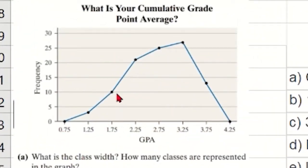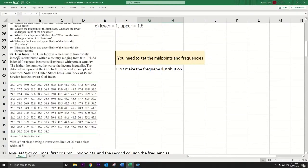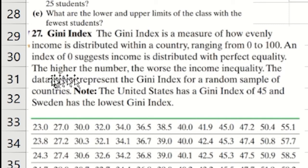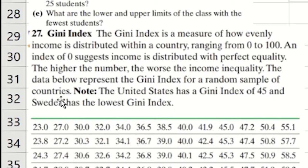A frequency polygon is lines connected by dots, and at the bottom are the midpoints. The question we're working with is the Gini index — a measure of how evenly income is distributed within a country, ranging from 0 to 100. An index of zero suggests perfect equality; the higher the number, the worse the income inequality. The data represents the Gini index for a random sample of countries, including the United States at 45 and Sweden with the lowest.